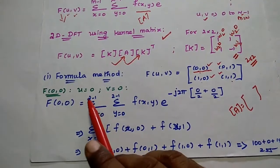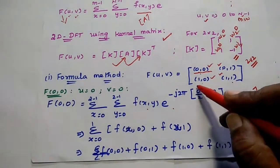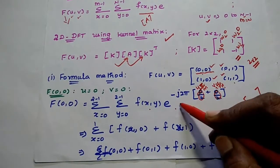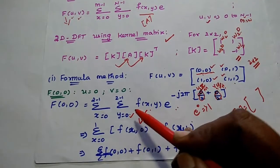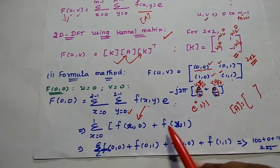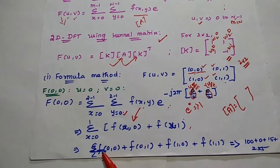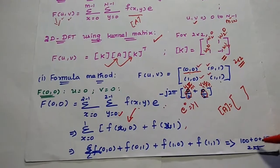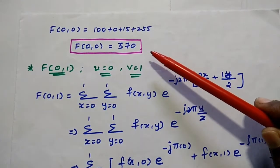Substituting into the formula: summation x from 0 to 1, summation y from 0 to 1. Since U and V are both 0, the exponential term becomes e to the power 0, which equals 1. Expanding the summation we get F(0,0) + F(0,1) + F(1,0) + F(1,1), meaning we add all values to get the first transformed value. F(0,0) equals 100 + 0 + 15 + 255 equals 370.